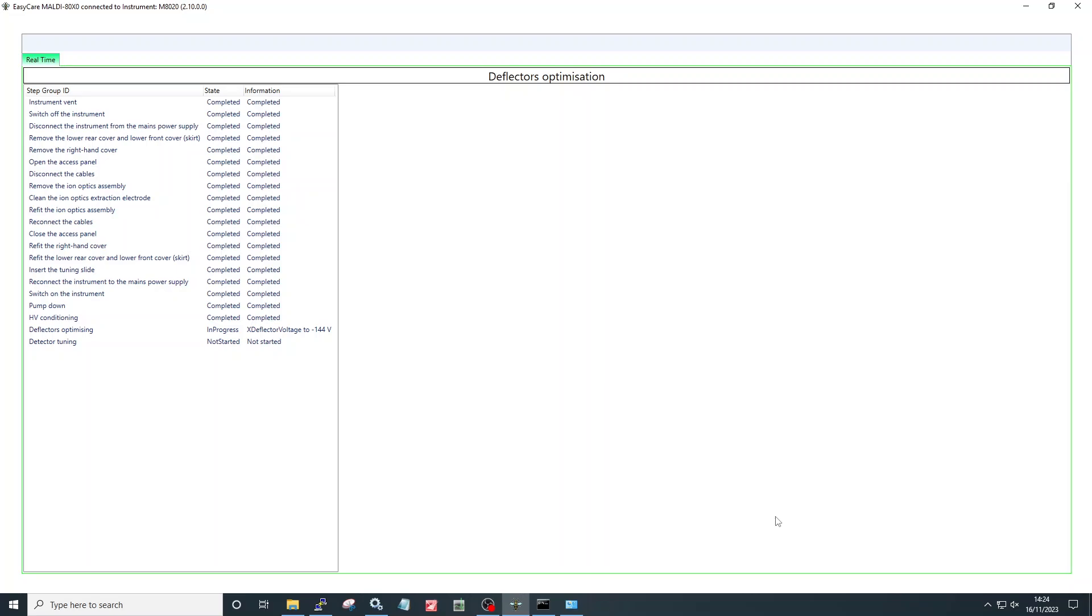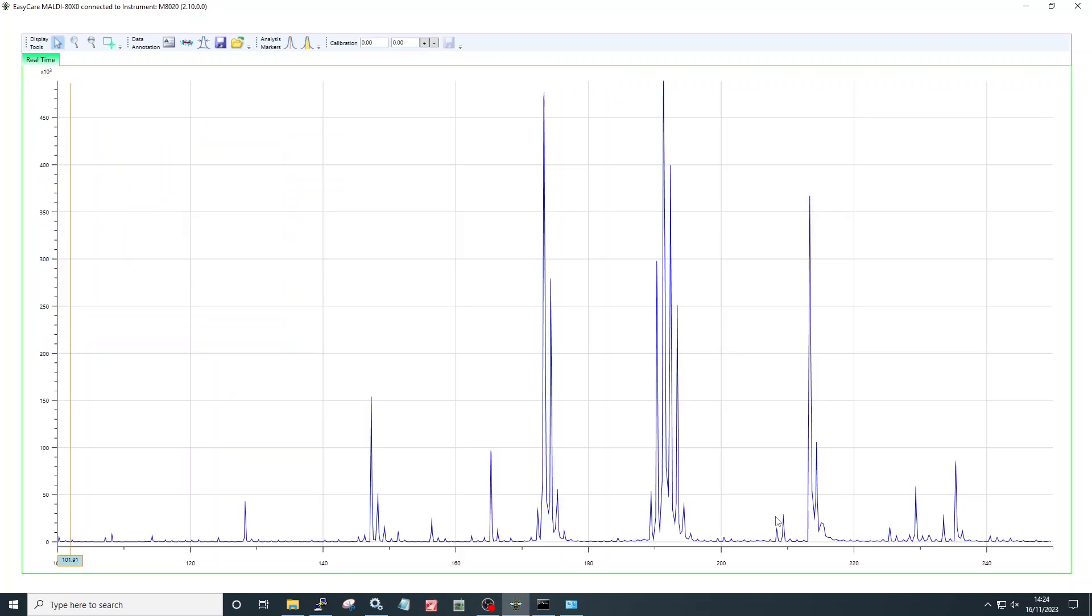On completion of the HV conditioning, the software will automatically run deflector's optimization. This will take around three or four minutes. Once complete, the optimum deflector voltage values will be automatically transferred and saved.